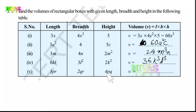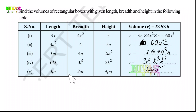Next one: coefficient 3 into 2 is 6, 6 into 4 is 24. For variables P, R, Q, R, P, Q: P into P is P squared, Q into Q is Q squared, R into R is R squared. So the answer is 24P²Q²R².